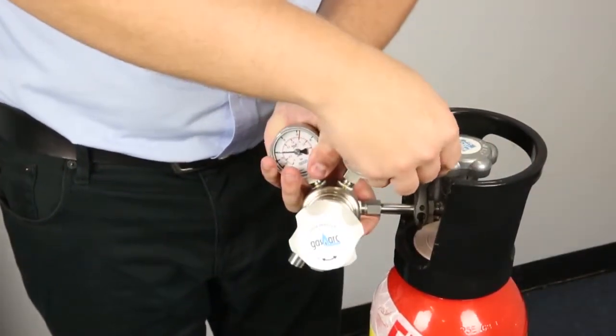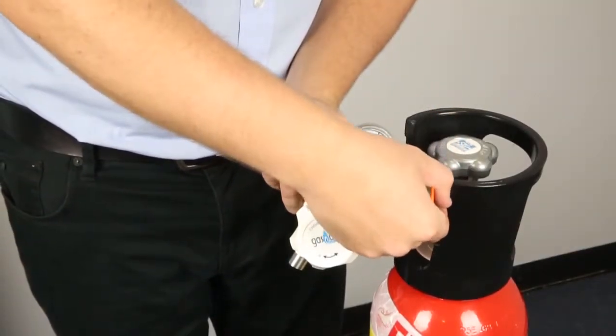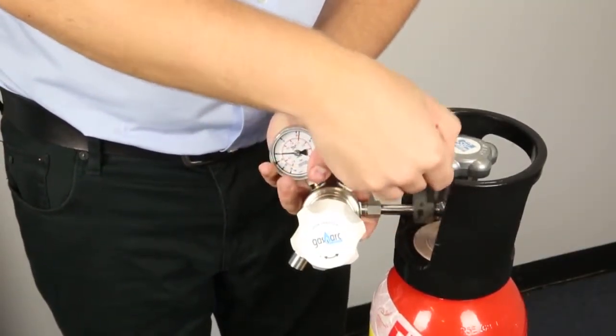When installing washer type fittings like a BS15 or AS type 45, be careful not to over tighten as you can damage the washer.